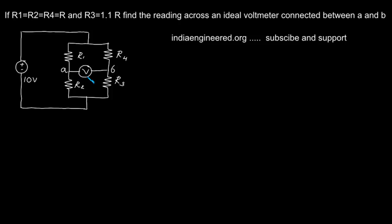The reading of the ideal voltmeter connected between A and B - in short, we are asked to find VAB. Now since the voltmeter is ideal, we can assume that there is no current flowing from A to B or from B to A.